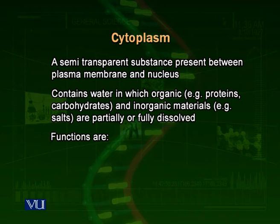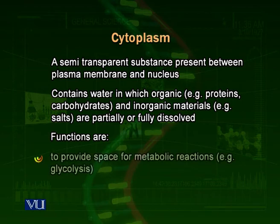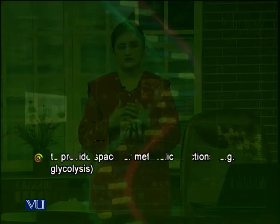It also has inorganic molecules like magnesium, calcium, potassium and so on. What are the functions of cytoplasm? There are two major functions. One is that cytoplasm provides space for different types of organelles — mitochondria, ribosomes, endoplasmic reticulum, Golgi bodies — they are all present inside the cytoplasm. Cytoplasm also provides a watery fluid which is required for different metabolic processes, supporting and helping in different types of metabolic processes.